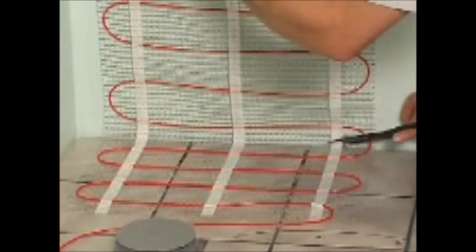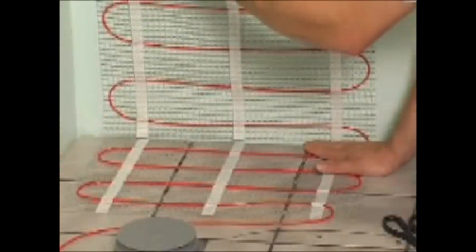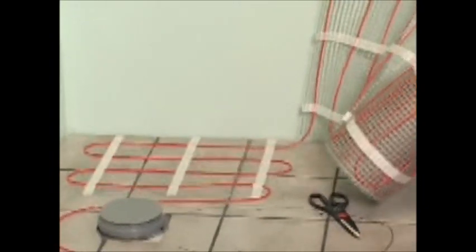When you reach the wall, cut through the grey mesh of the mat and twist it in the desired direction. Do not cut the red cable.